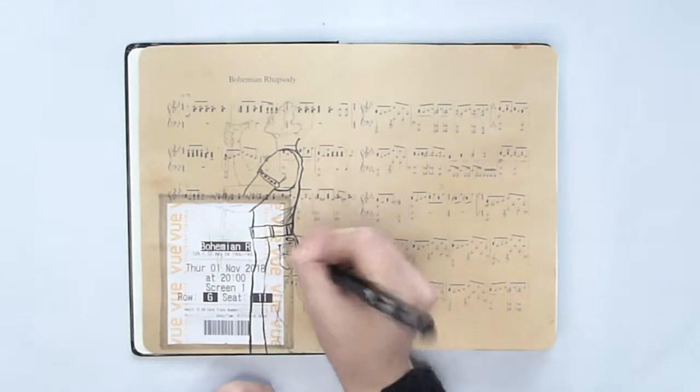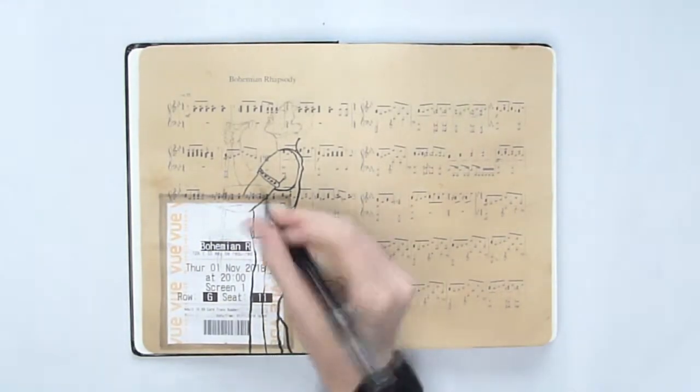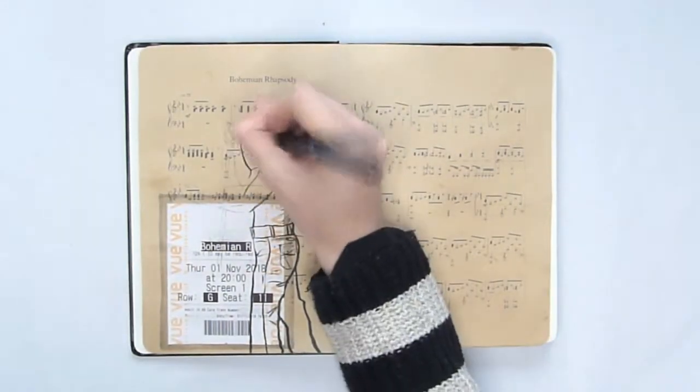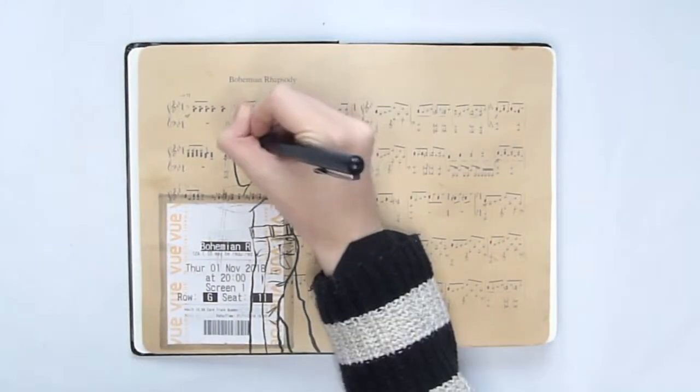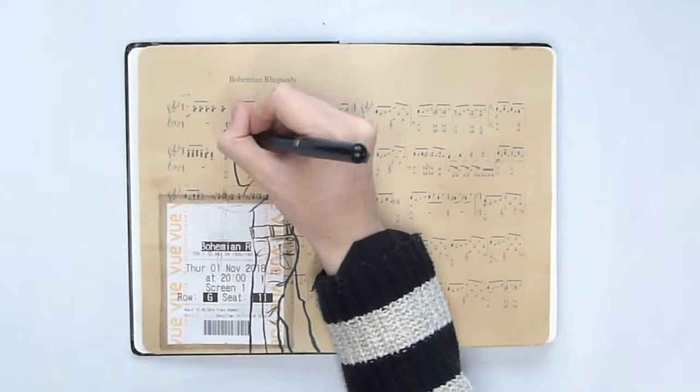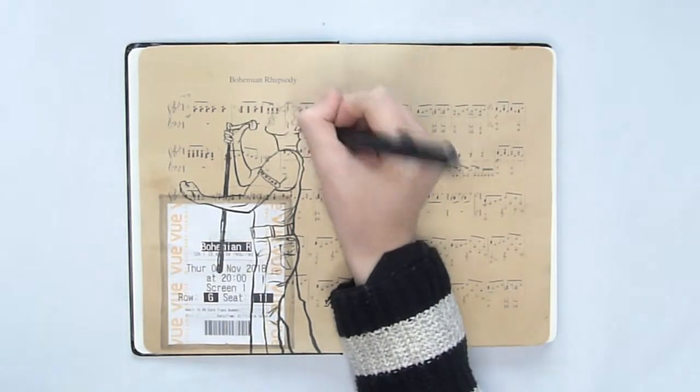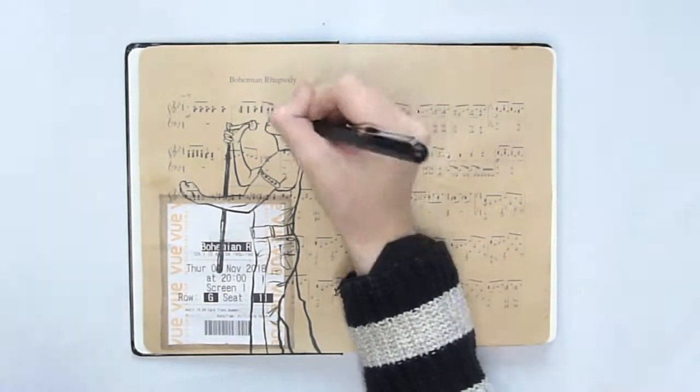Over the top, I drew Rami Malek from the film with a brush pen. I thought the page needed an extra something in the background because it looked slightly empty, so I drew all these lines with the markers I used for the border of the ticket.